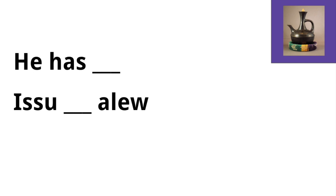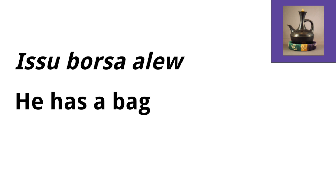For the third person male conjugation of 'to have,' we have 'alo.' So for 'he has something' you would say 'asu alo.' For the example, 'he has a bag' in Amharic becomes 'asu borsa alo,' where 'borsa' means bag in Amharic.